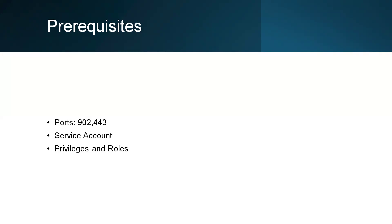We should have one dedicated service account to integrate vCenter to Rubrik. The service account should be added in vCenter with minimum privileges. The privileges are defined by Rubrik. There should be one role created in vCenter with those minimum privileges, and that role should be added to the service account in vCenter.